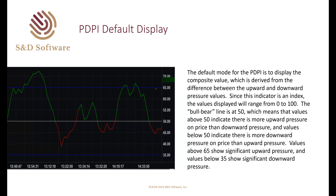There's also a high line at 65 and a low line at 35 on the chart. Based on backtesting, when the PDPI gets above 65, there's very significant upward pressure and price is usually moving very quickly upward; below 35 indicates very significant downward pressure. These reference lines can be adjusted for different markets after backtesting, but they work well across a significant range of markets.